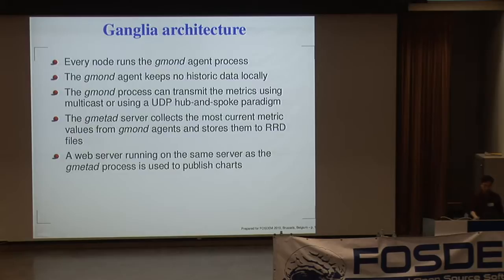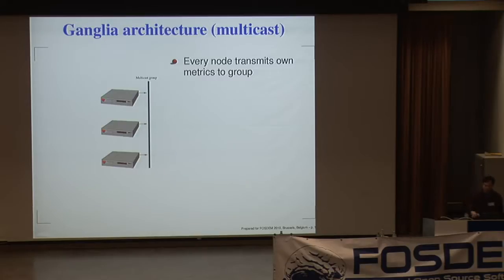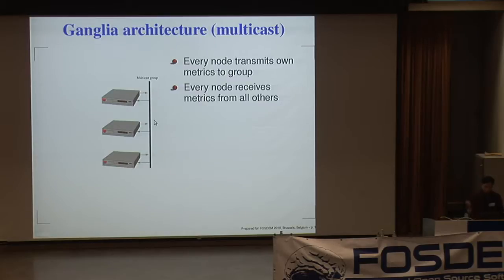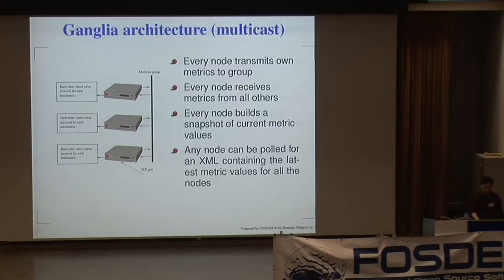The web server creates the graphs and charts you see. By default, Ganglia uses multicast because it's very easy to set up — just start the daemon. Every node transmits its own metrics to the multicast group and receives metrics from each other. So if you talk to one node, it will know the metric information of the entire group. The node can be polled on a specific port and it gives you an XML output of what the metrics look like, which is used to send information around.